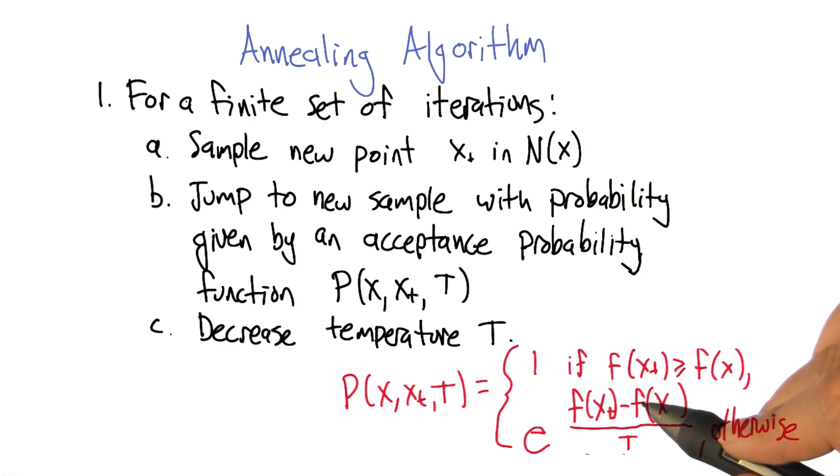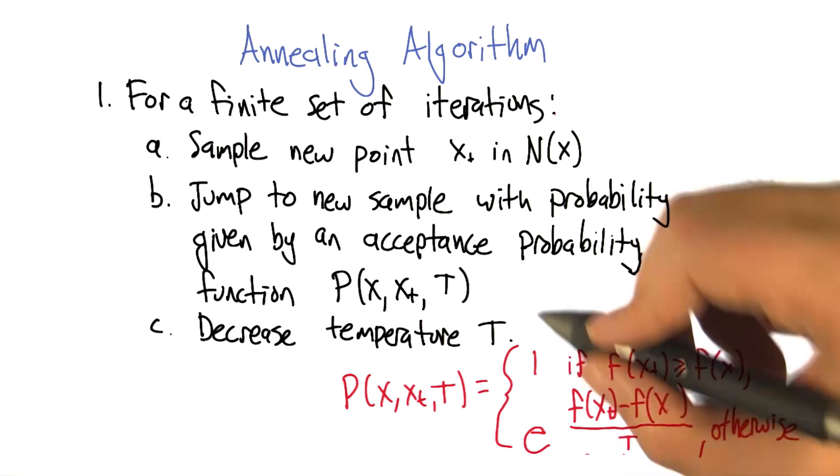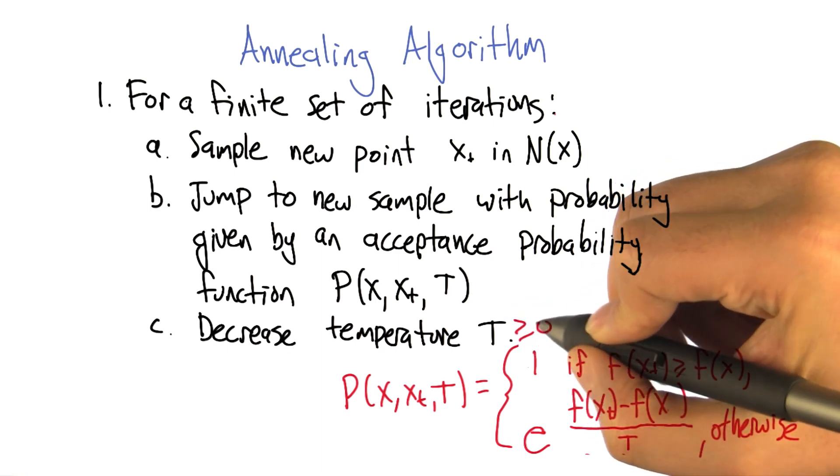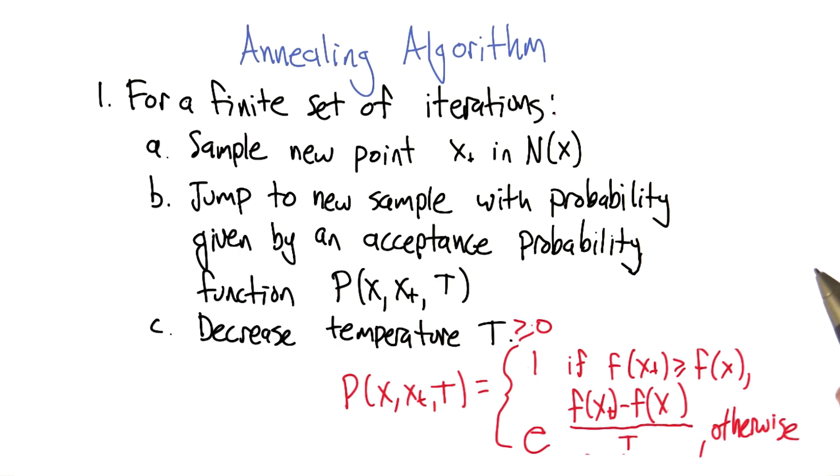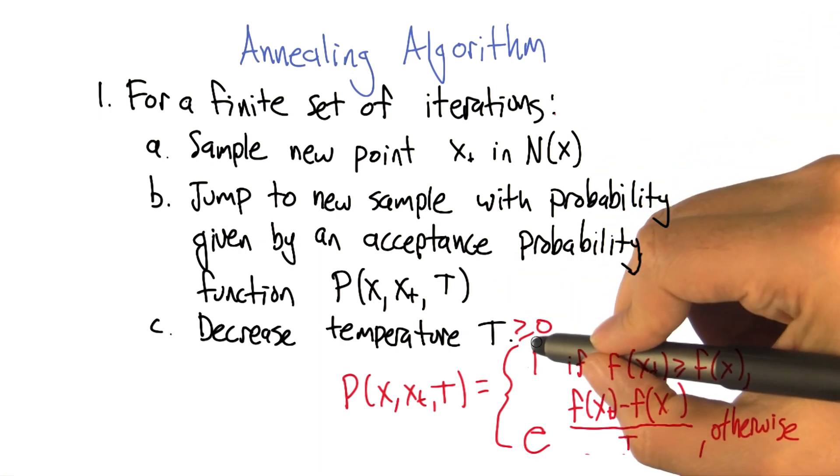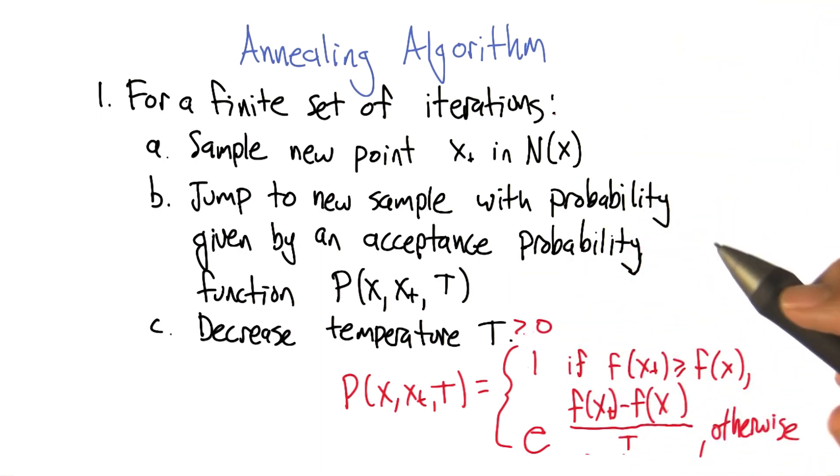But what if it's a big step down? Well, then that number is really, really negative. And negative divided by some positive number - T is a temperature, so T is always greater than or equal to zero, probably making it equal to zero could run us into trouble, so let's just say it's bigger than zero. So it's in Kelvin. We'd have a really big negative number, and e to a really big negative number is one over e to a really big number, so that makes it very close to zero.